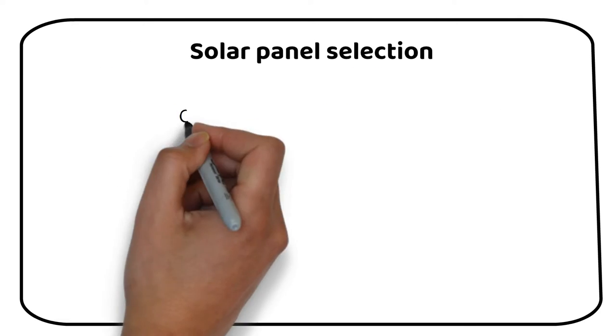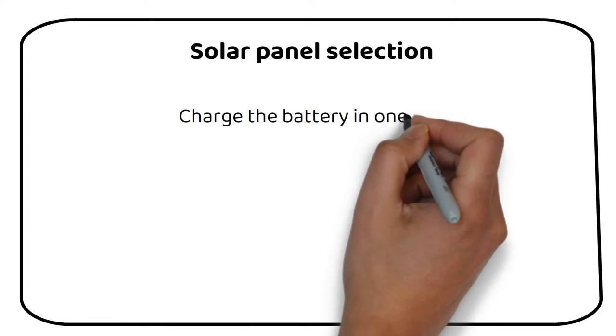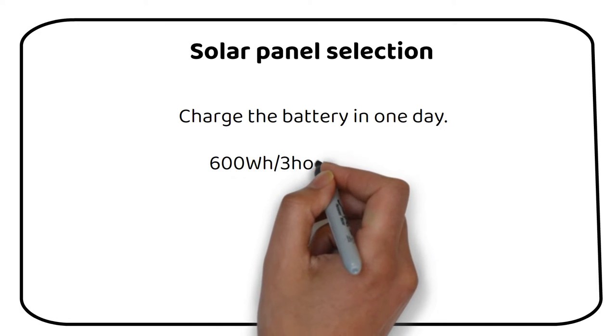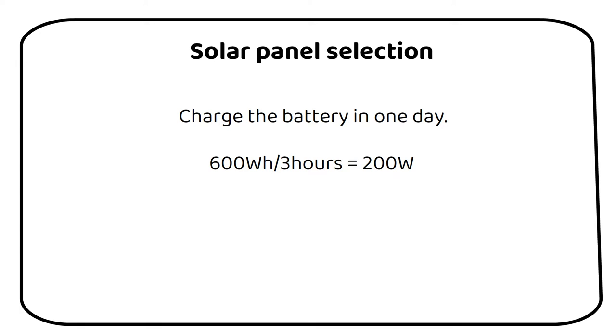The solar panels should charge the battery in one day. In most locations the amount of sun hours per day is 3. Remember that our usable battery capacity was 600 watt hours. If we divide 600 watt hours by 3 hours we become 200 watts. So we need 200 watts worth of solar panels to charge the battery in one day.